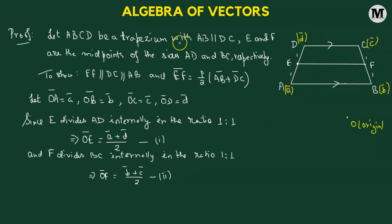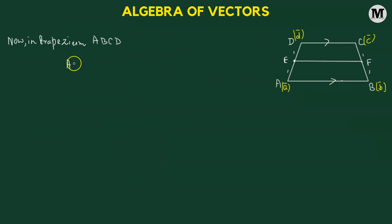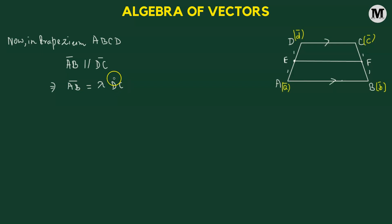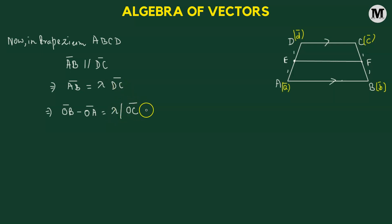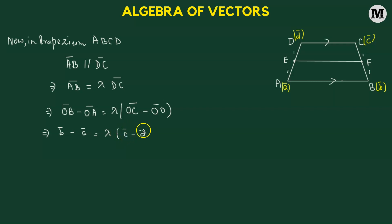From the diagram, AB is parallel to DC, so AB vector is parallel to DC vector. This means AB vector equals some scalar λ times DC vector. In terms of position vectors: OB − OA = λ(OC − OD), which gives b − a = λ(c − d). Let this be equation 3, which we keep aside for now.